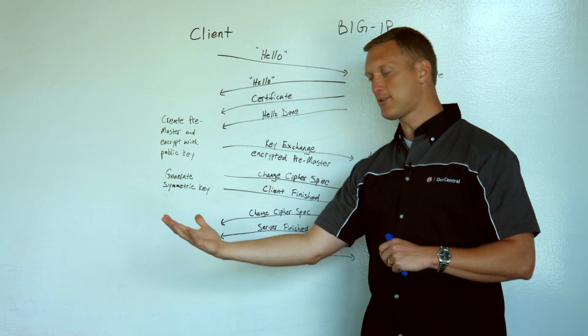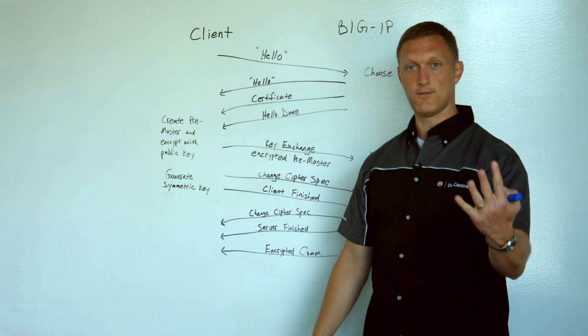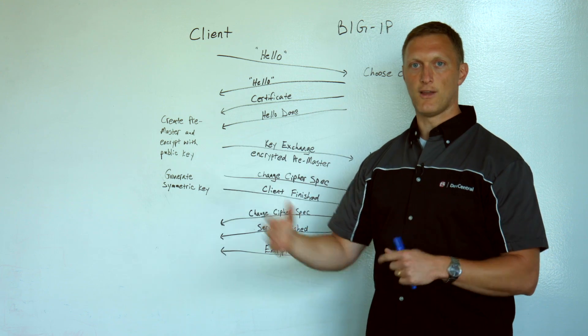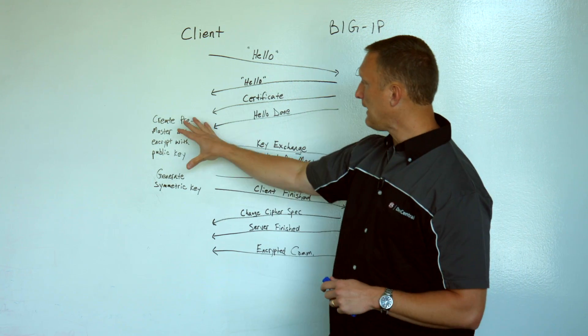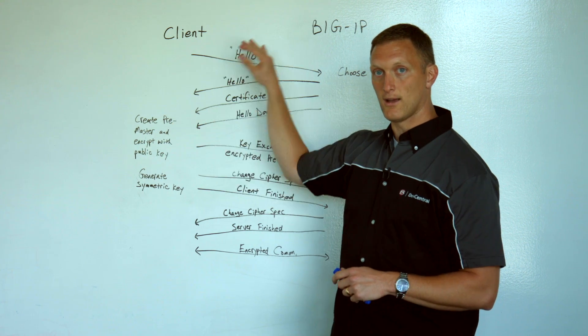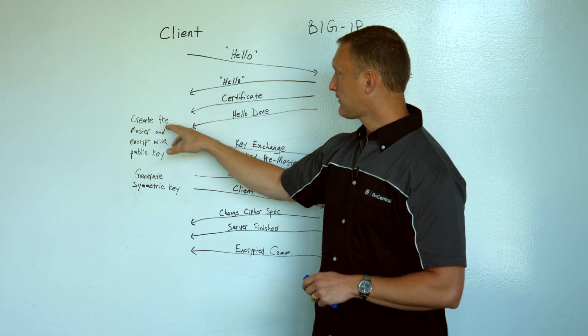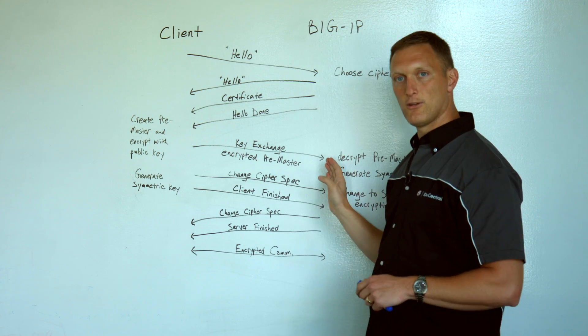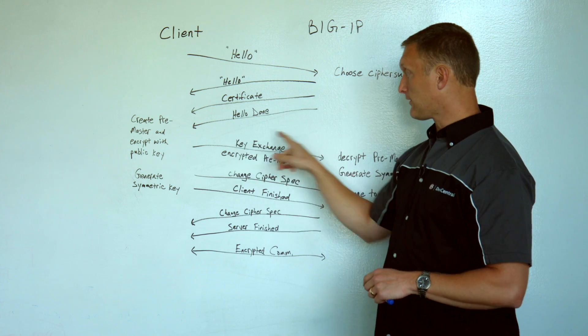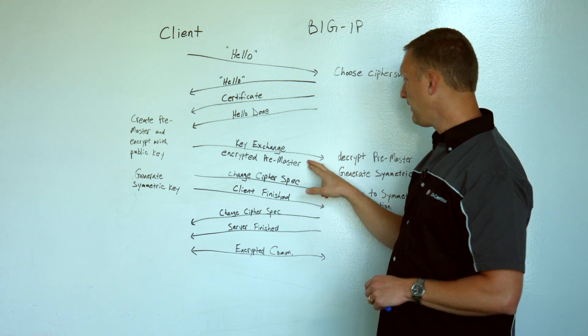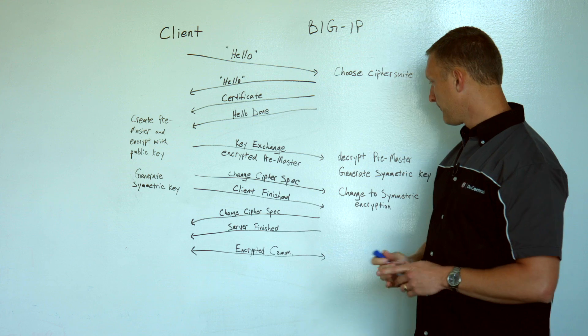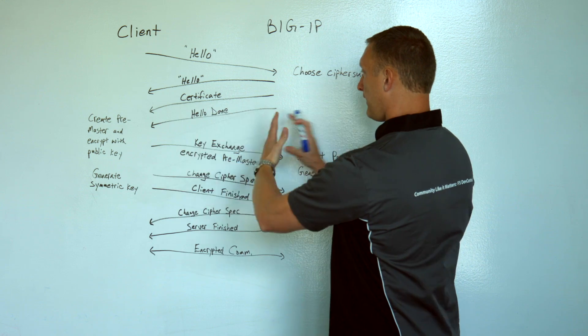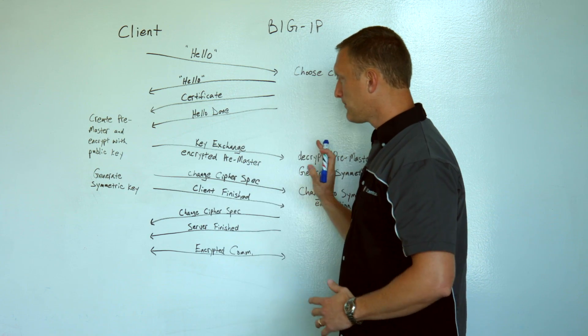You can encrypt something with one key, a public key, and then the only other person that can decrypt that is the one that has the private key. We won't get into the details of asymmetric encryption, but needless to say, this is where the asymmetric encryption starts to happen in the handshake. When the client creates the pre-master secret and then encrypts it with the public key, it's going to send that back to the server. And this is part of the key exchange, this encrypted pre-master secret. The server gets it over here and it's going to be able to decrypt it because it has the private key. So all of this right here is asymmetric encryption.